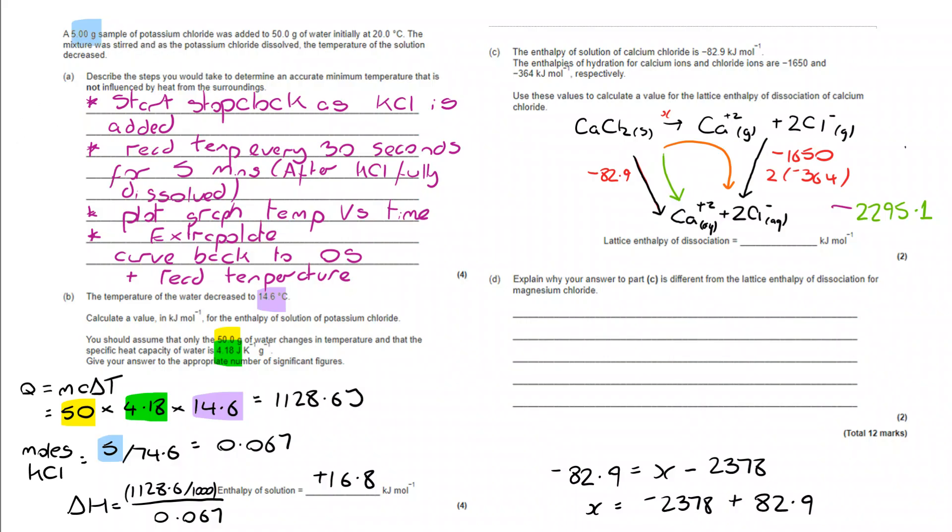Moving on to part D. Explain why the answer to part C is different from lattice enthalpy of dissociation for magnesium chloride. Well, for this one, what's important is that the magnesium ion is smaller than the calcium ion. And because of that, there is a stronger attraction to the negative ion. So there are your two marks there.